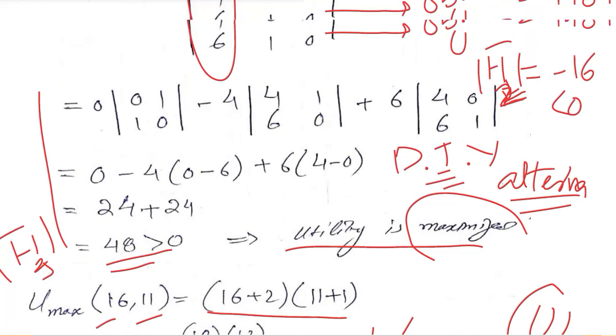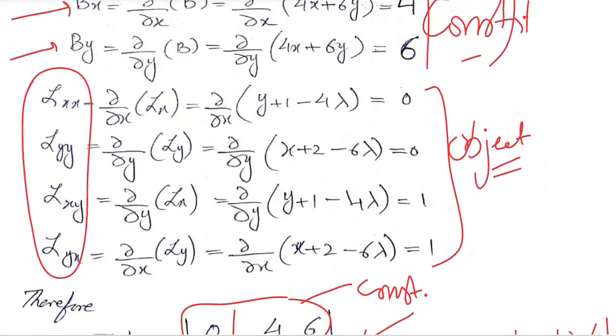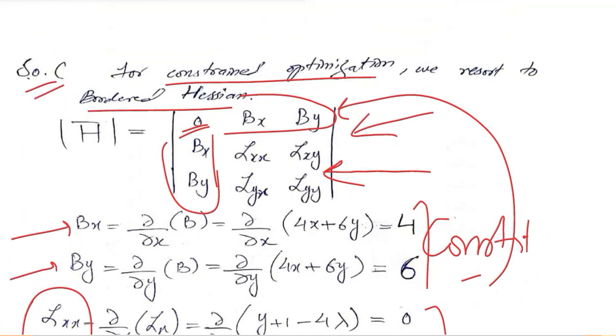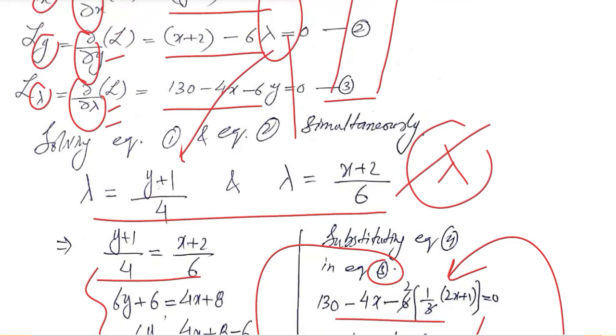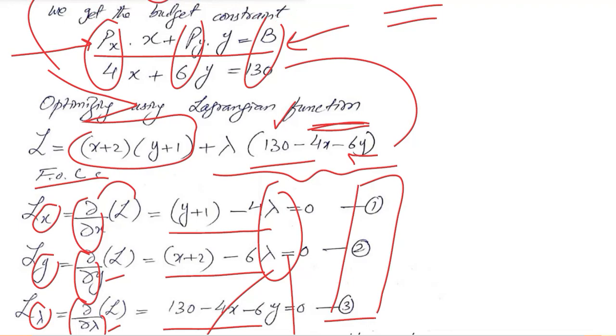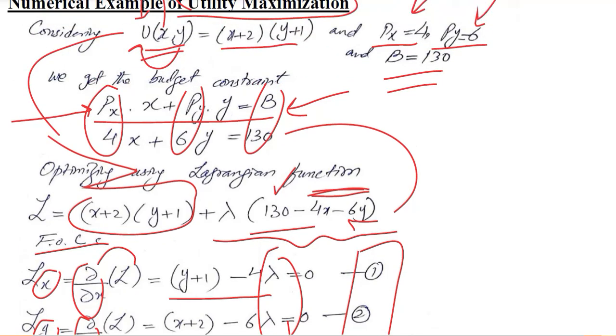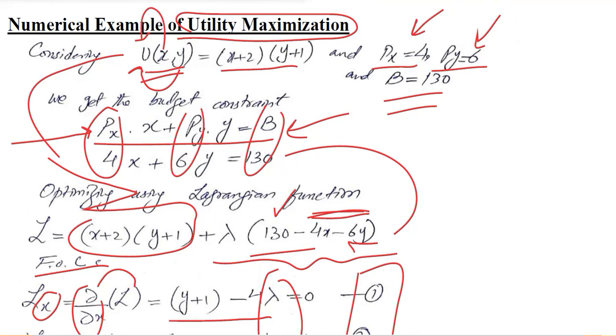So what we have done is we have found the optimized value of utility function. The critical values were also found in this process. And there was a constraint, there was bordered Hessian determinant. This was actually the numerical example of utility maximization by using the tools of constrained optimization. Thank you.